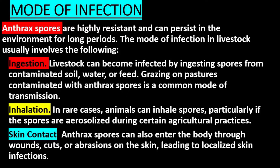Mode of Infection: Anthrax spores are highly resistant and can persist in the environment for long periods. The mode of infection in livestock usually involves the following. Ingestion: Livestock can become infected by ingesting spores from contaminated soil, water, or feed. Grazing on pastures contaminated with anthrax spores is a common mode of transmission. Inhalation: In rare cases, animals can inhale spores, particularly if the spores are aerosolized during certain agricultural practices.